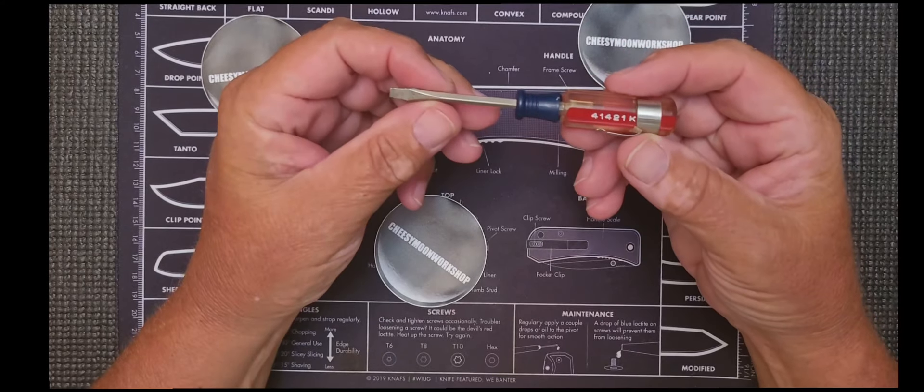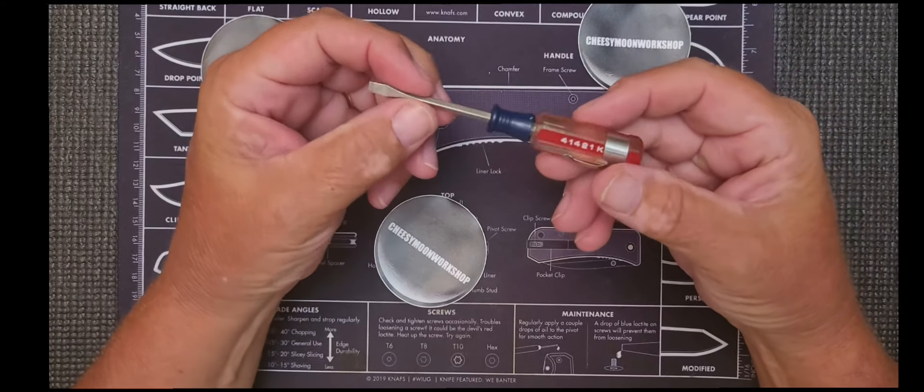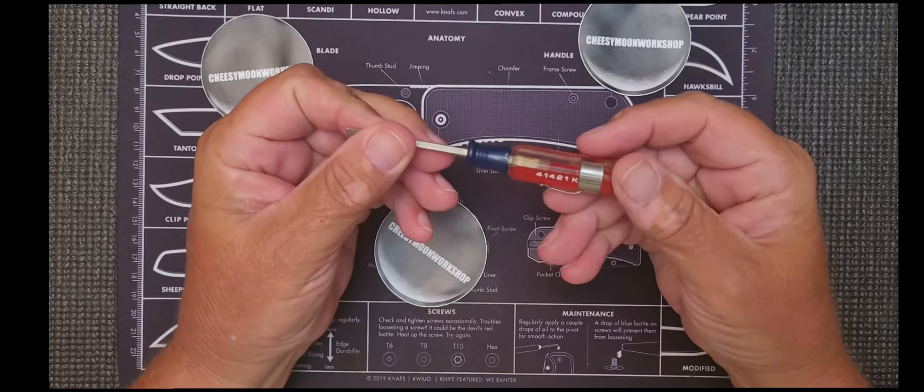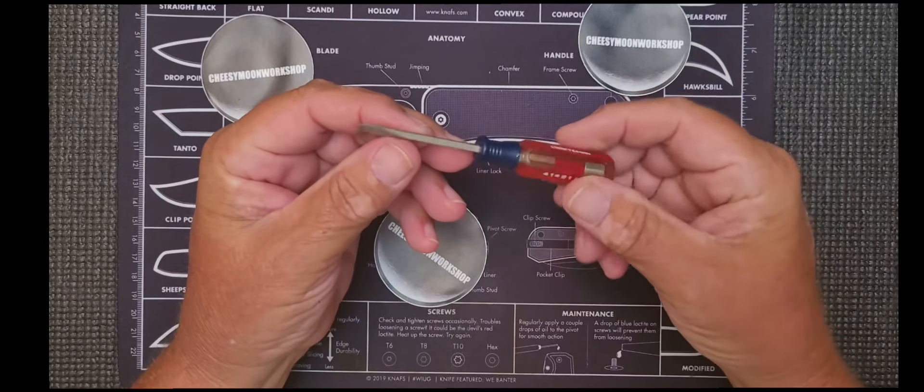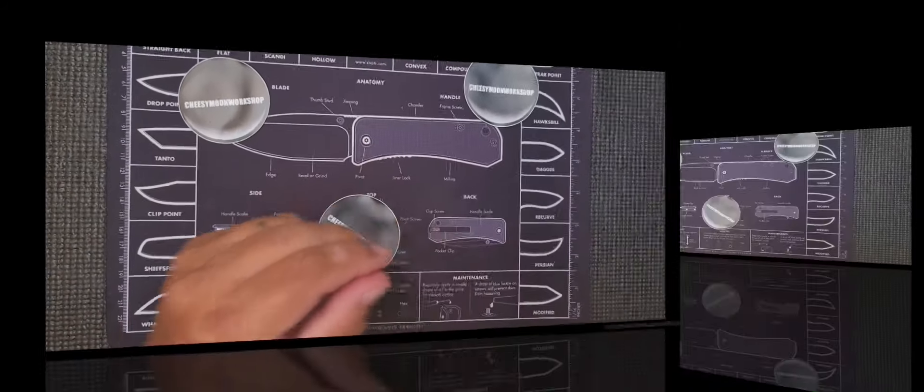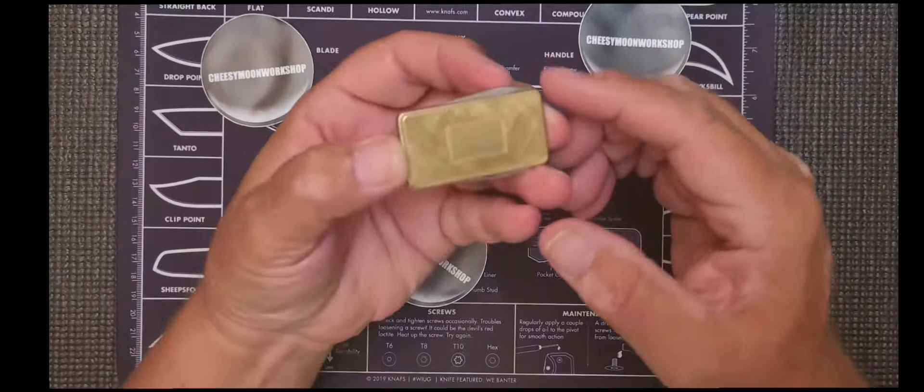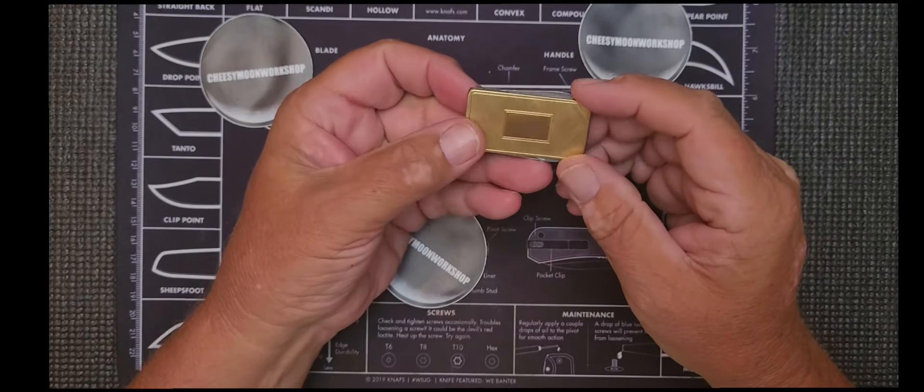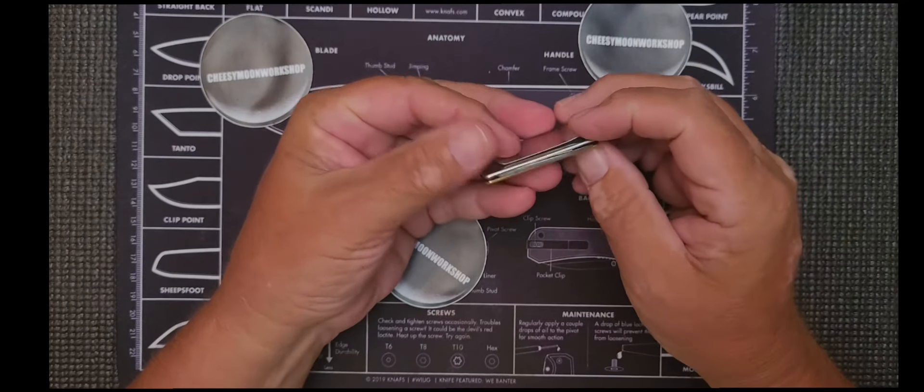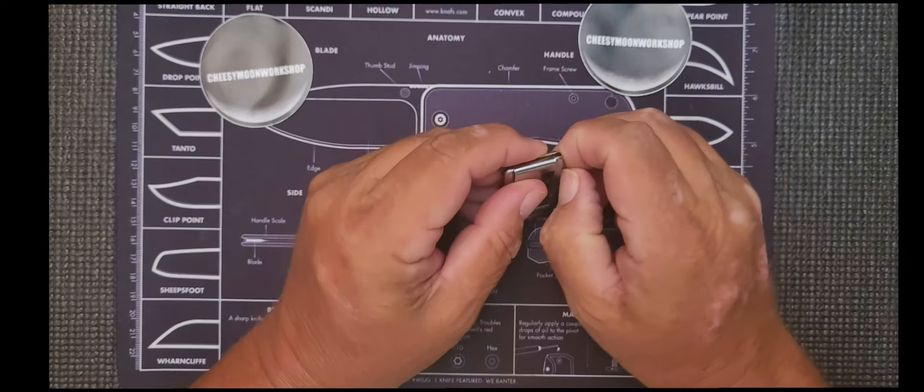These items I picked up at an estate sale. I got this handy little Craftsman screwdriver. Can't go wrong with Craftsman. These little tiny screwdrivers come in pretty handy. Add this little pocket clip gentleman's knife, whatever you want to call it.